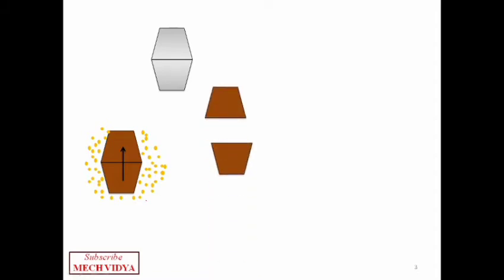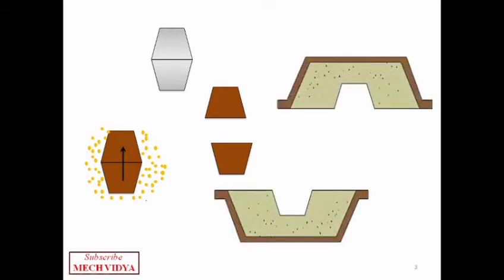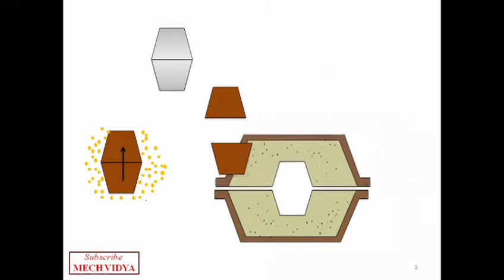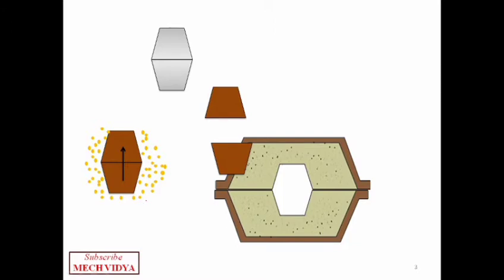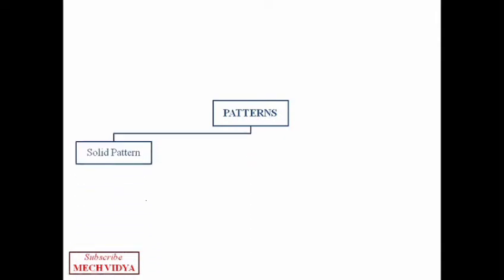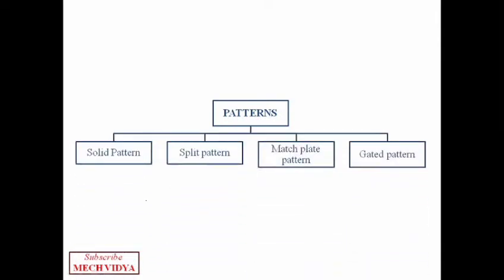Now what will happen is that when we close this, we will get the final shape of the metal casting. So the patterns can be of numerous types, however in this video we will discuss four important types only. The first pattern is the solid pattern.